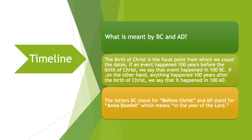Now we come to timeline. First let us know what is meant by BC and AD. The letters BC stand for Before Christ and the letters AD stand for Anno Domini, which means in the year of the Lord. The birth of Christ is considered as the focal point, the most important point from which we count the dates. If an event happened 100 years before the birth of Christ we say it happened in 100 BC, and if anything happened 100 years after the birth of Christ we say it happened in 100 AD.